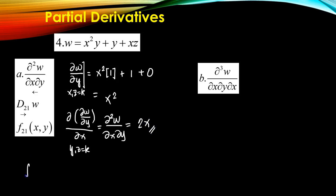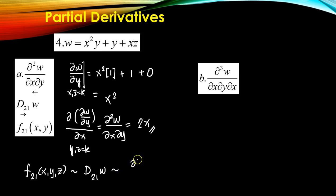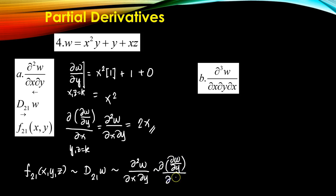Sometimes, if you see f¹ of (x, y, z), this is similar to saying d¹w of (x, y, z), or the second partial of w — first with respect to y and then with respect to x — or equivalently, the partial of w with respect to y and then getting the partial again with respect to x. So these notations are all equivalent.